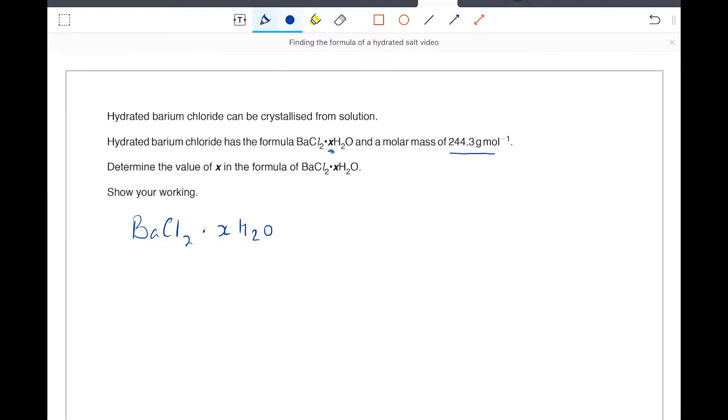We've been told the molar mass, so I know how much one mole of this compound weighs in total, including the water. It's very straightforward to figure out how much the barium and the chlorine are contributing to the mass. Using my periodic table, the molar mass of barium is 137.3 grams per mole. Two chlorines, 35.5 each, have a mass of 71. So the barium chloride contributes 208.3 grams towards this 244.3 grams per mole.